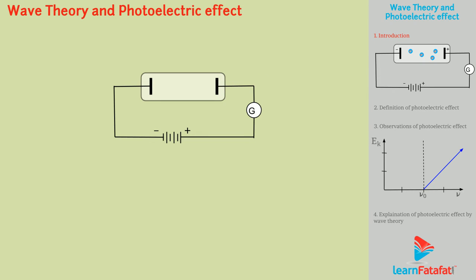When a light beam of sufficient energy is allowed to strike over the metal connected to negative terminal, it is observed that electrons are emitted from metal and travel towards the detector.